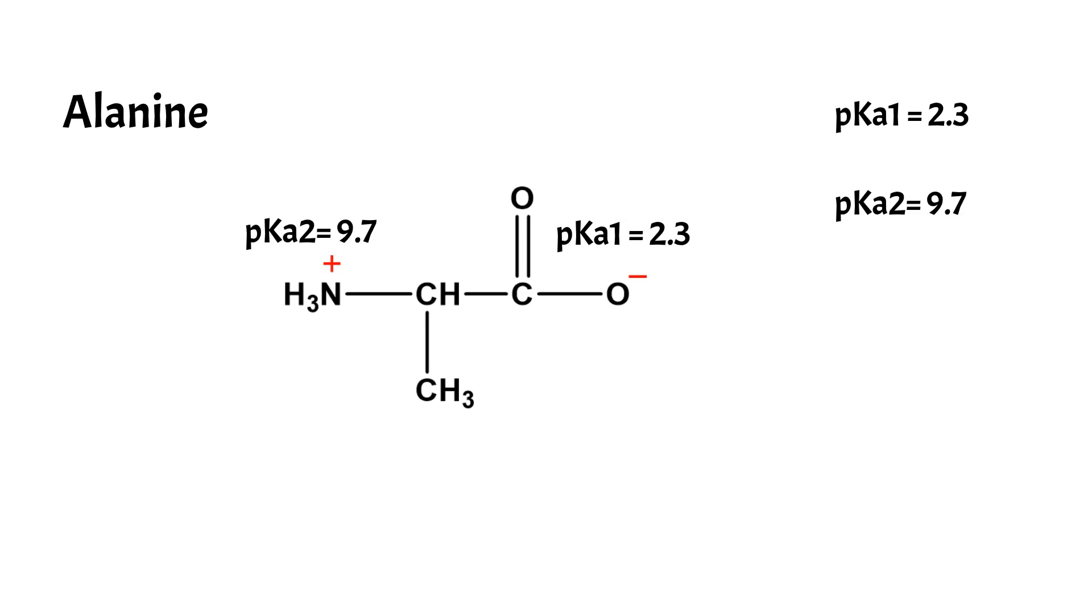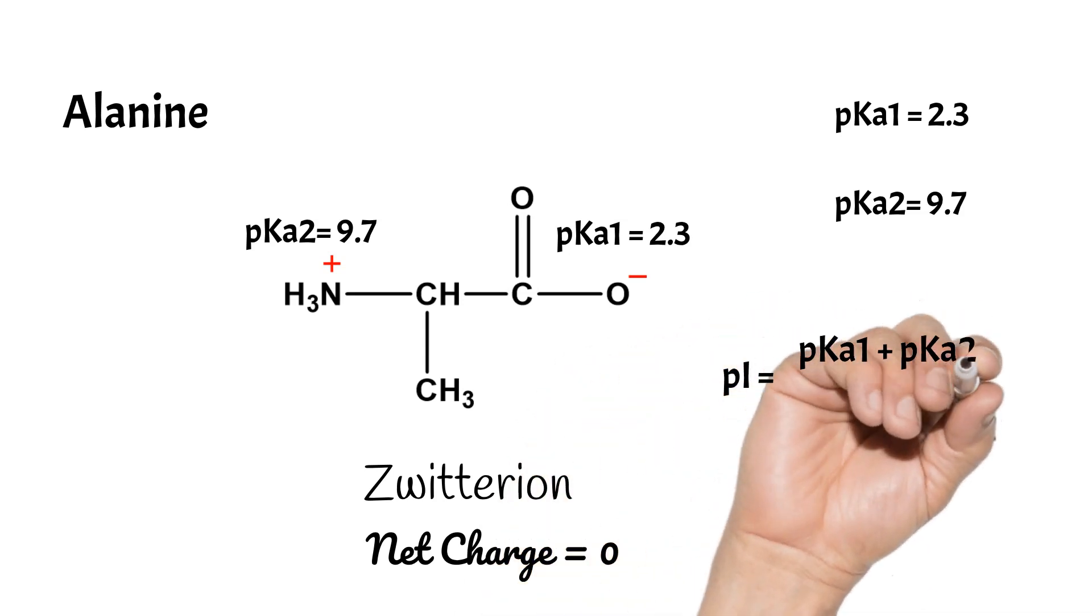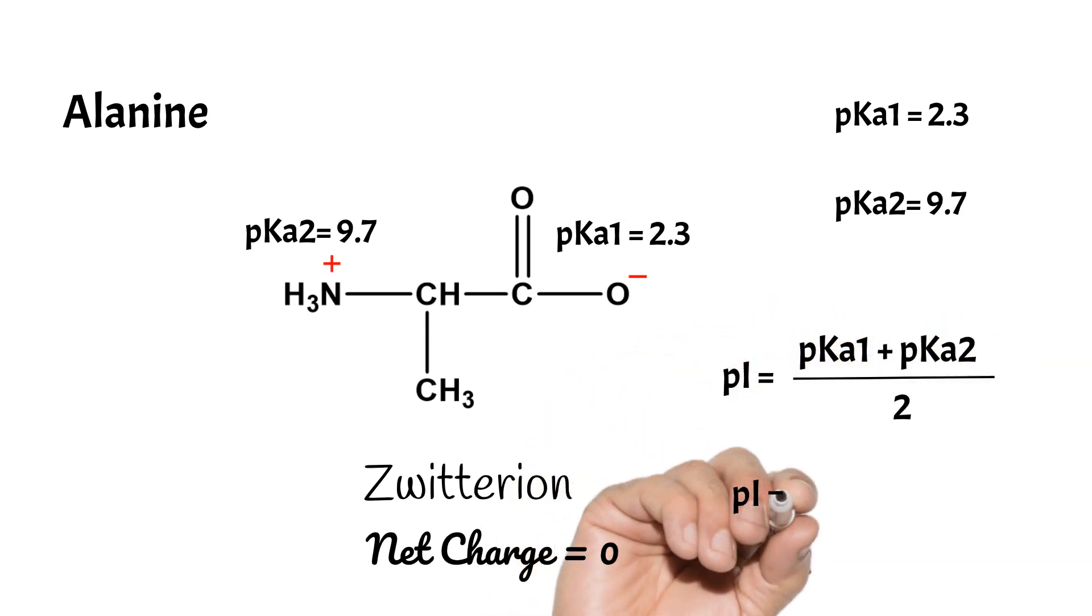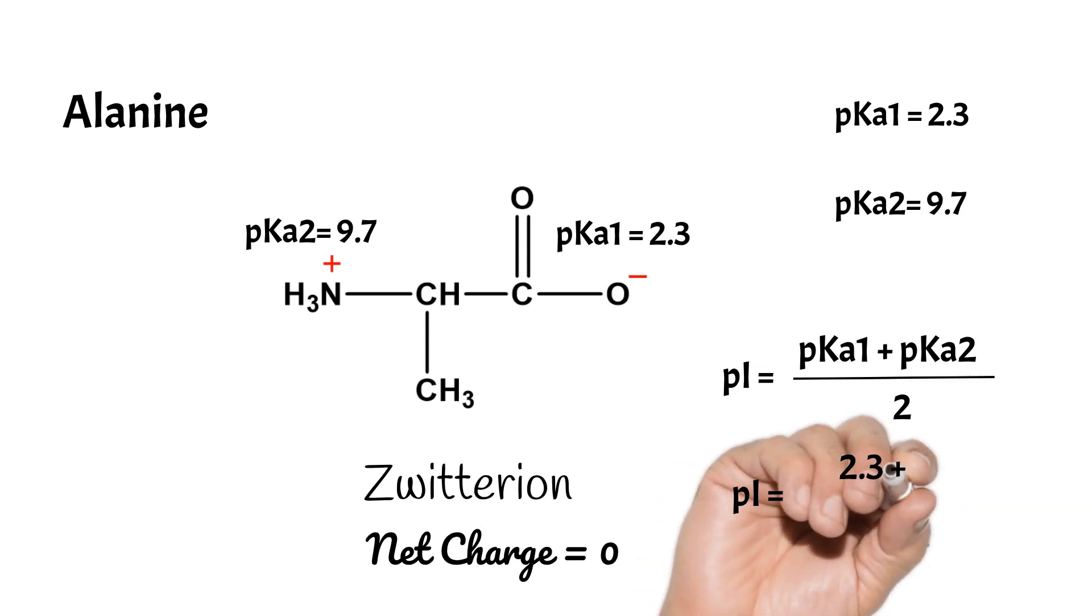In biological systems, at pH around 7, the carboxylic group will be deprotonated and has a negative charge, while the amino group is protonated and has a positive charge. This structure with zero net charge is called the zwitterion. The isoelectric point, pI, is the pH at which the amino acid has no net charge and is electrically neutral at the presence of zwitterion, and can be calculated for alanine as the average of the two pK values.